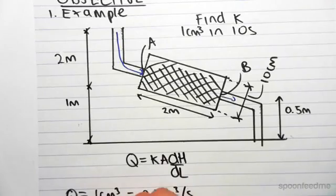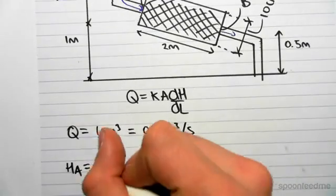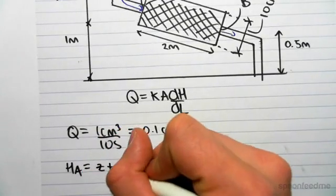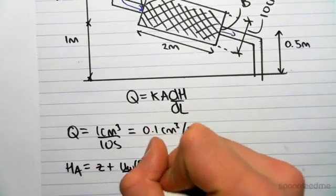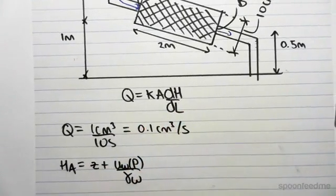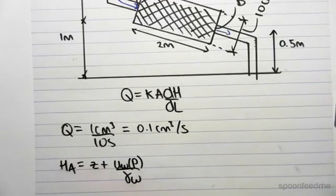The head at point A: we know head equals Z plus the pore water pressure over gamma W, the unit weight of water.